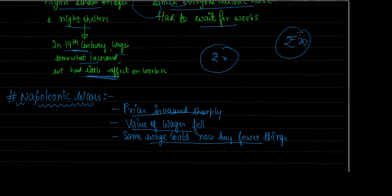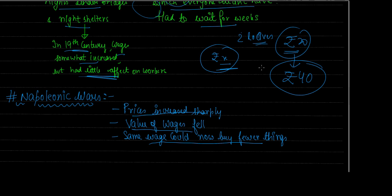Wages didn't decrease, but the same wage could buy fewer things because the cost of goods increased. For example, if your wage is X rupees and bread costs 20 rupees, you could buy two loaves. But if during the Napoleonic Wars the cost doubled to 40 rupees, with the same wage you can only buy one loaf. So real purchasing power fell. This affected even employed workers, and for unemployed workers the situation was far worse — no jobs yet a higher cost of living.